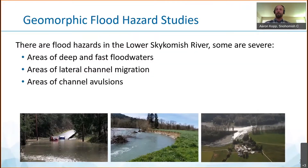Recent studies help identify the greatest likelihood of flood hazards along the lower Skykomish River, including some severe hazards, which include areas of fast and deep flood waters, areas of lateral channel migration — which occurs when a river moves over time and naturally erodes one bank and deposits sediment along the opposite side — and areas of high avulsion potential, the rapid relocation of a channel across the floodplain.